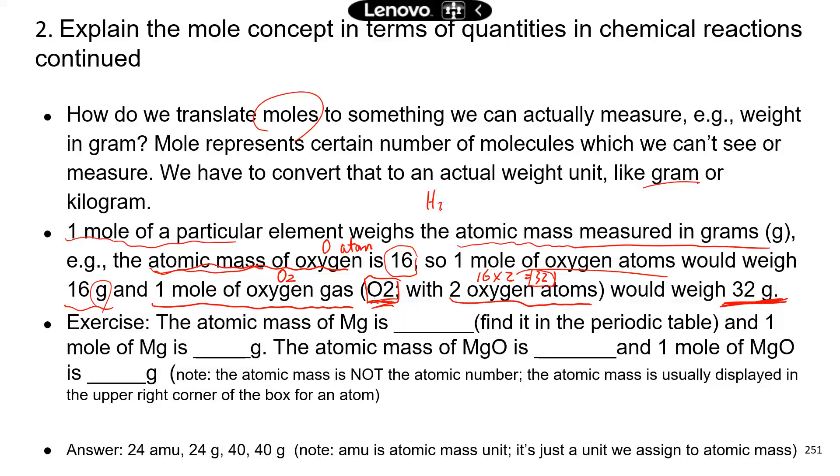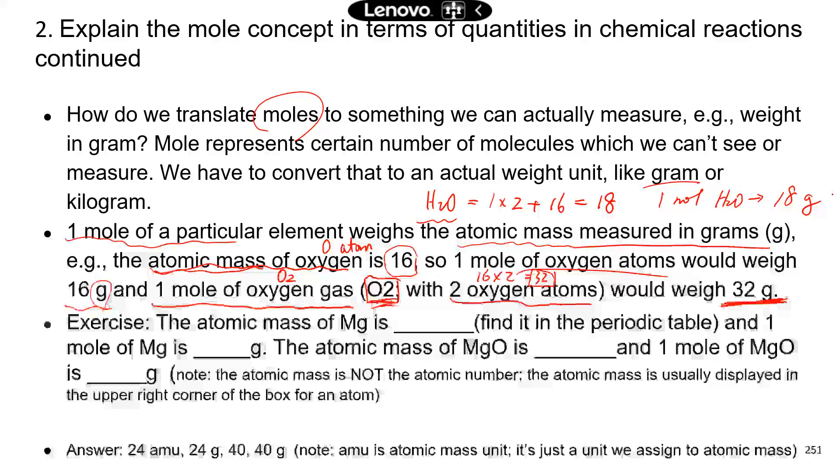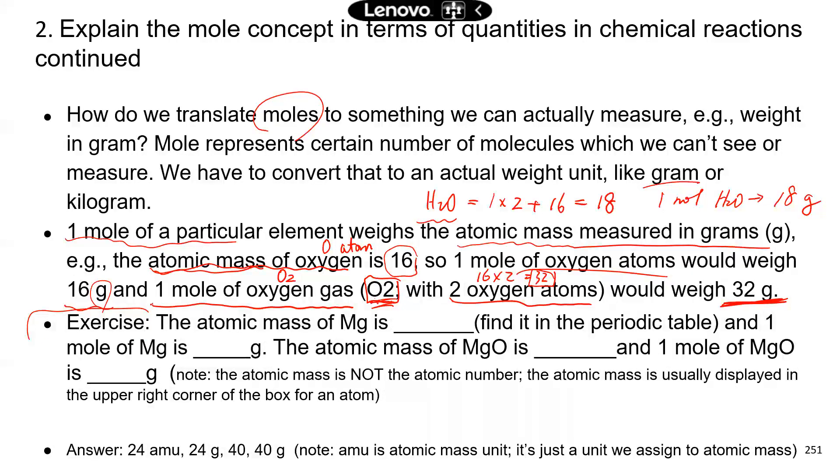How about water? H2O. So each hydrogen weighs one, and we have two hydrogen atoms. So one times two, and oxygen is 16, right? So the total atomic mass for water is 18. So one mole of water would weigh how much? Right? 18 grams. Okay. Not bad, right? As long as you can figure out the atomic mass from the periodic table, right? And then just kind of add everything up to make that molecule. And then that's the weight. That's the actual weight per mole.